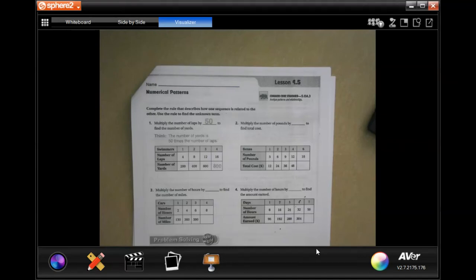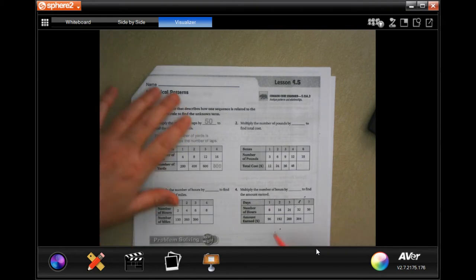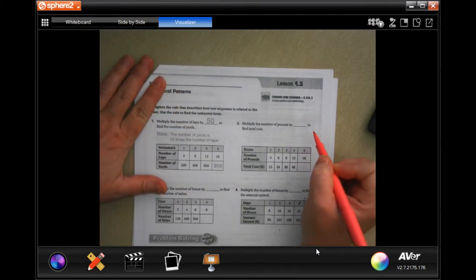Hey y'all, welcome to fifth grade chapter nine. We're going to get started with number two, and it says to multiply the number of pounds by blue to find the total cost.